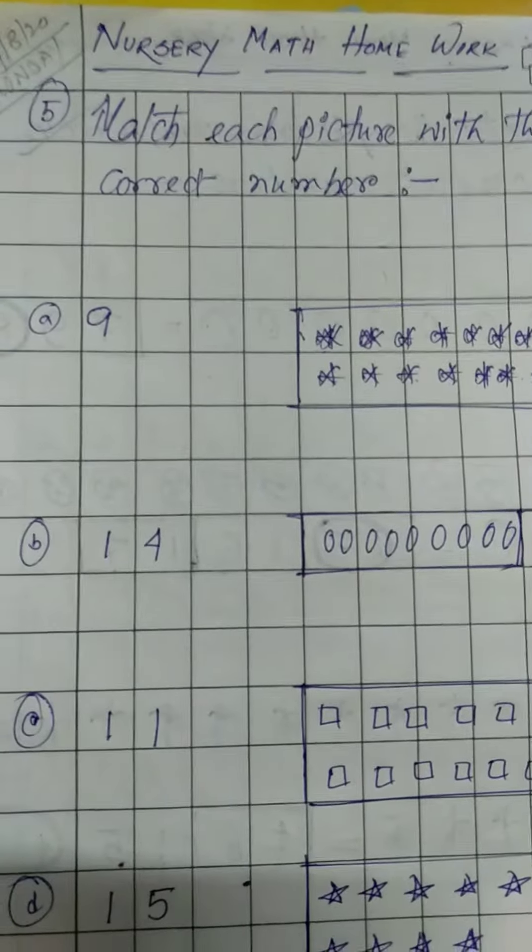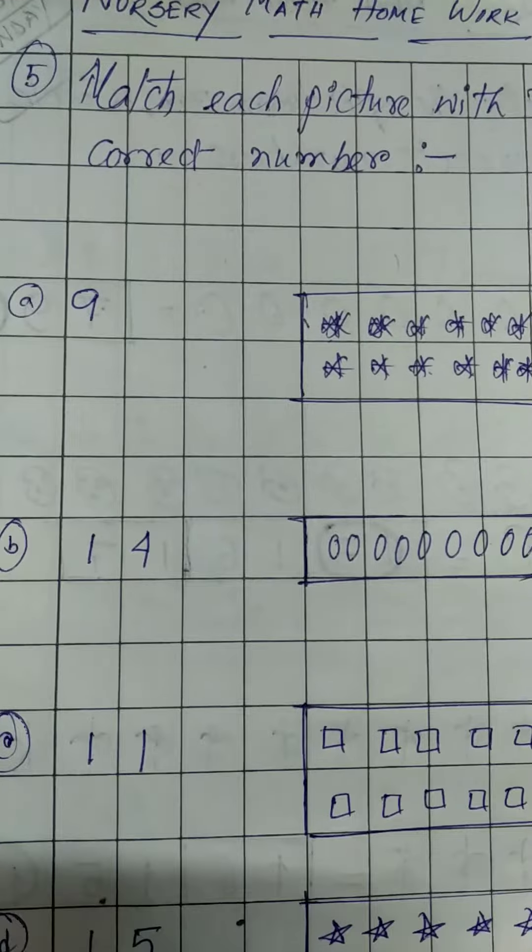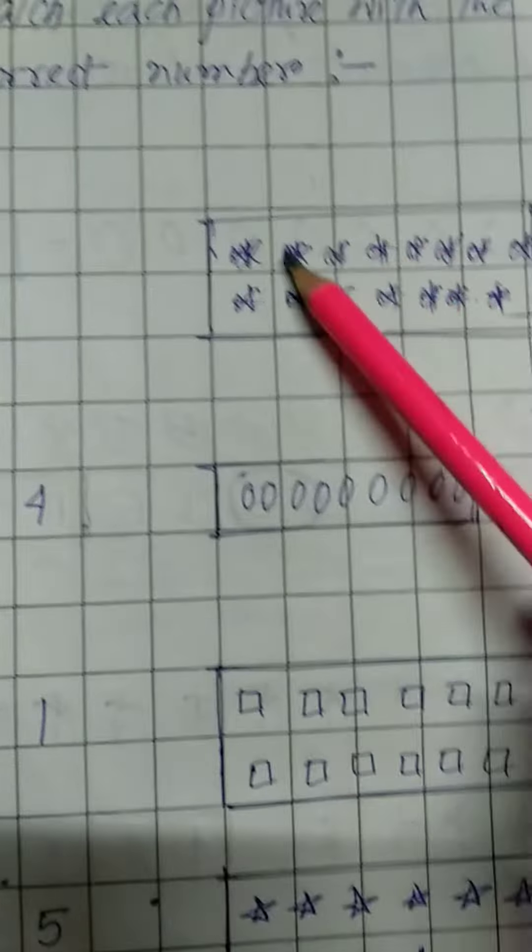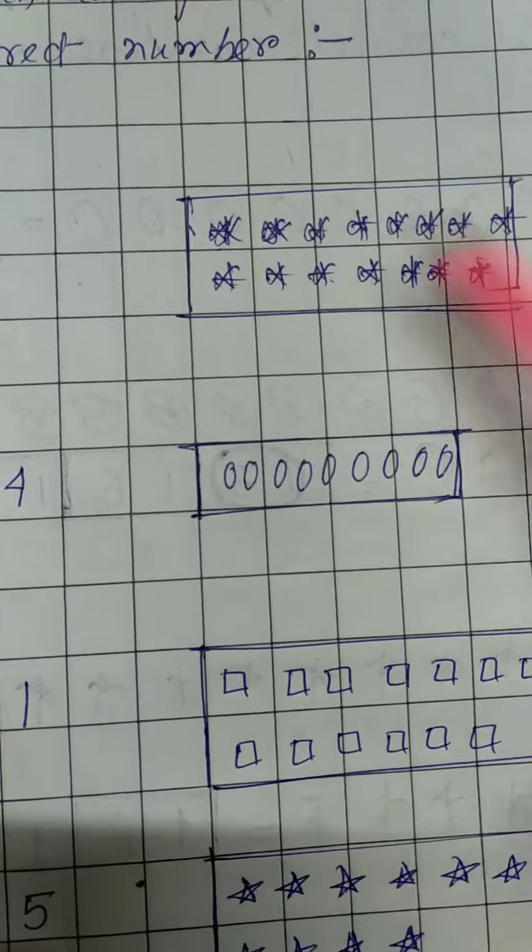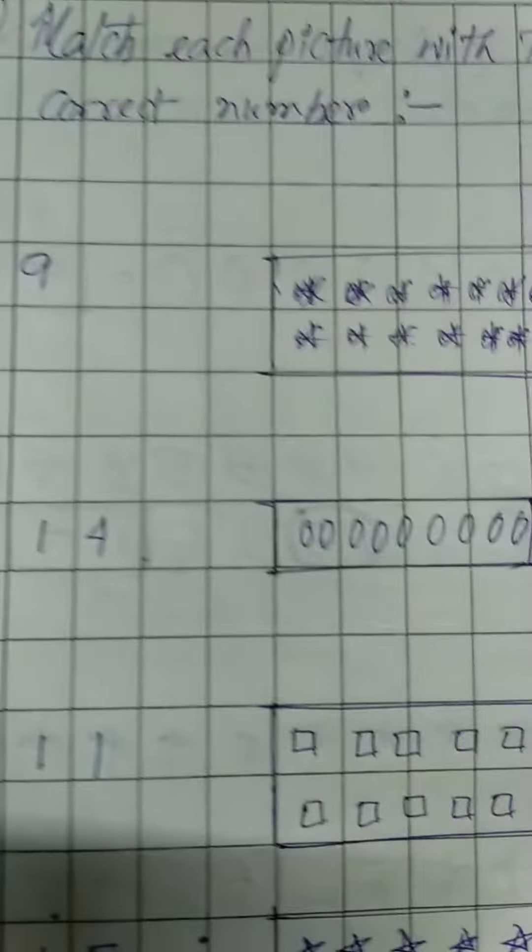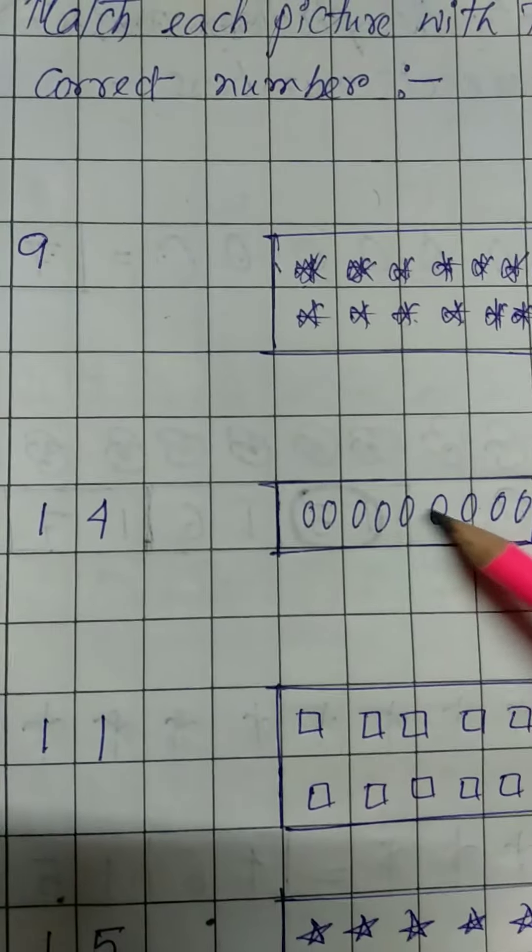Okay, so first one is 9. So where is 9? You have to count 1, 2, 3, 4, 5, 6, 7, 8, 9, 10, 11, 12. This is not 9. 1, 2, 3, 4, 5, 6, 7, 8, 9. Here is 9, okay, you have to just match it.